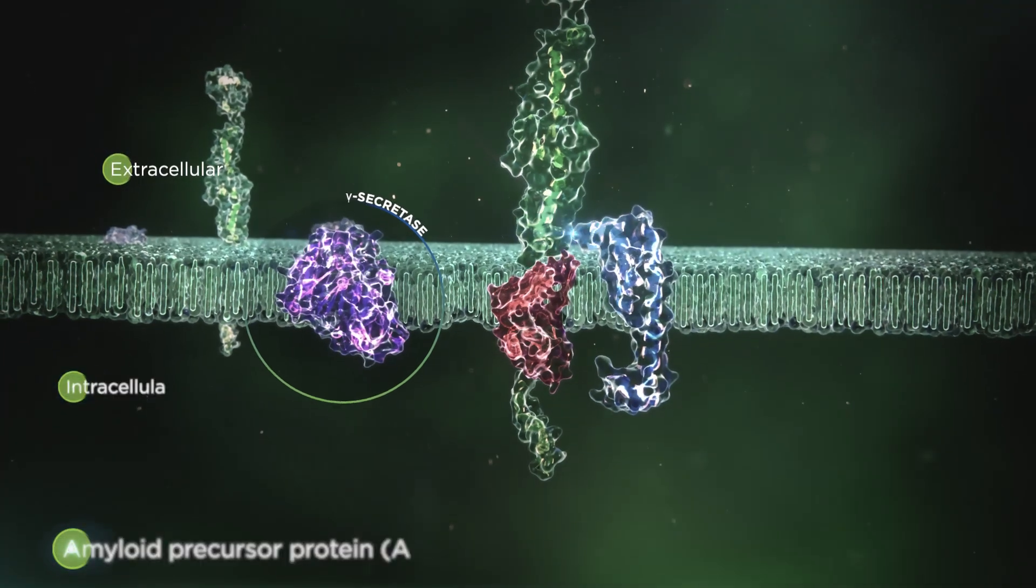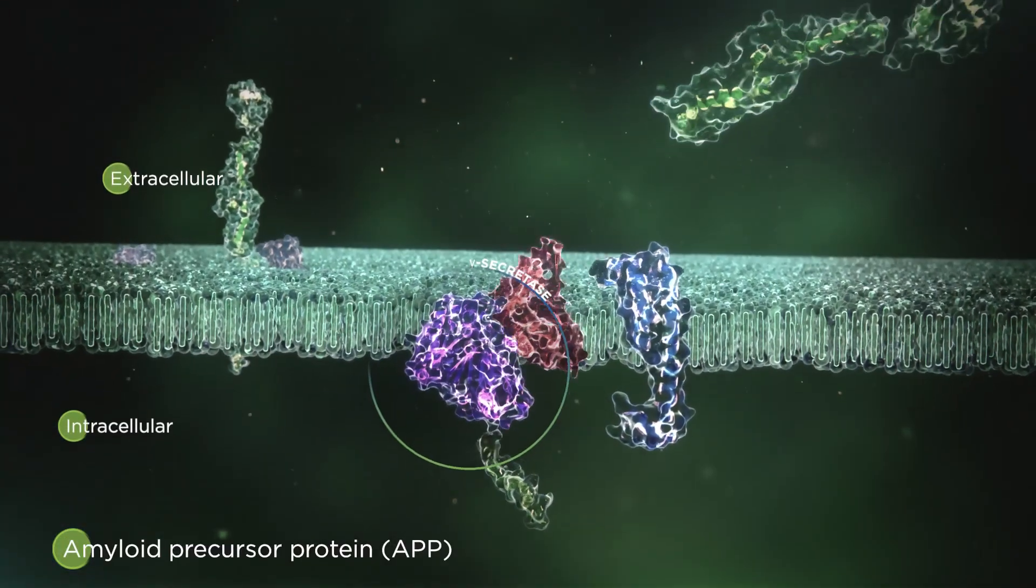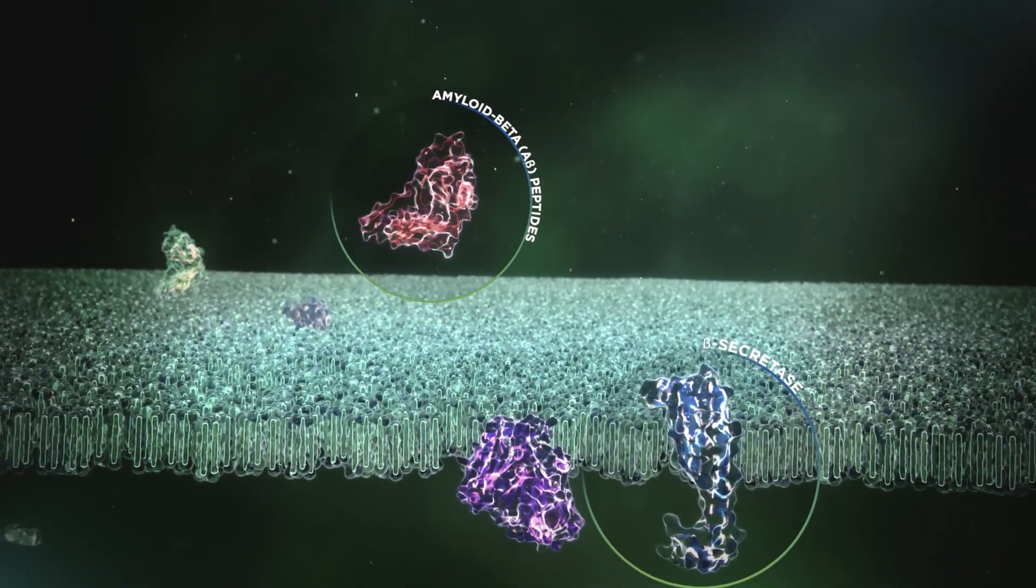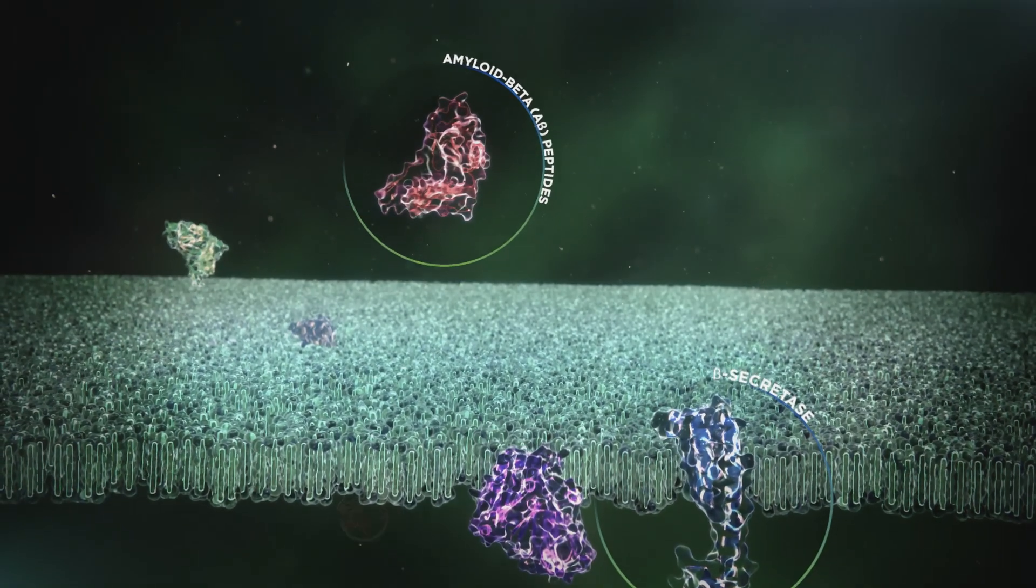In healthy patients, the cleavage of amyloid precursor protein, or APP, produces amyloid beta, or A-beta peptides, which are effectively cleared from the body.